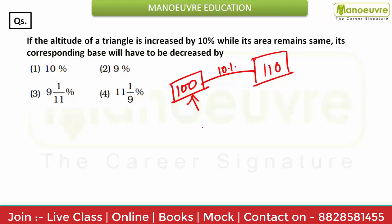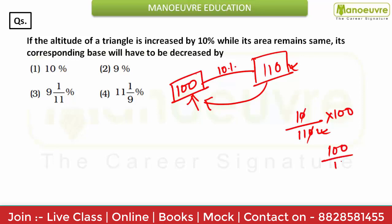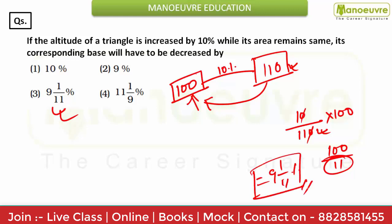To keep the area the same at 100 percent, I need to reduce the base. The base was 100, and now the height is 110, so the base must become 100/110, which simplifies. The decrease in base is 10 out of 110. In percentage terms, this is 100/11, which is 9 and 1/11 percent. As soon as you see 11 in the denominator, you can directly mark option 3. The answer is 9 1/11 percent.